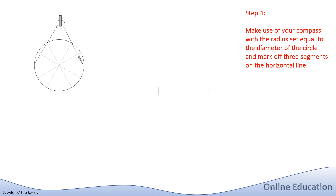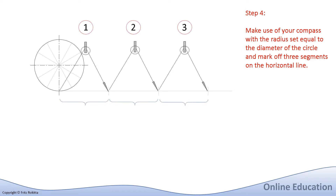With the next step, we will make use of our compass and stretch it to the full diameter of the circle, which is 60 mm. We will make sure the compass remains at a distance of 60 mm, and then we will start at the base of our circle where the center line at the bottom intersects with the base of the circle, and mark off three equal segments equal to the diameter of the circle, as shown in this illustration.